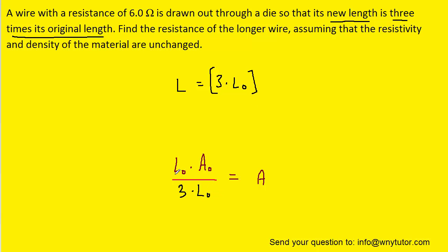We can then see that a factor of L0 cancels. So the final area is equal to one third of the original area.